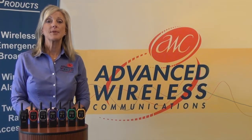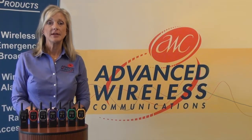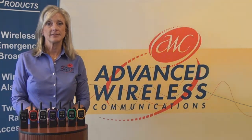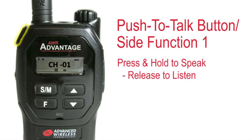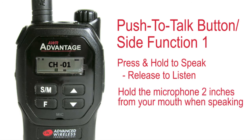Now that you know what the buttons can be programmed to do, let's talk about the default settings. This is the push to talk button, which is also known as side function one. Press and hold the button while speaking, and release the button to listen. As a reminder for proper operation, hold the microphone two inches from your mouth when speaking.